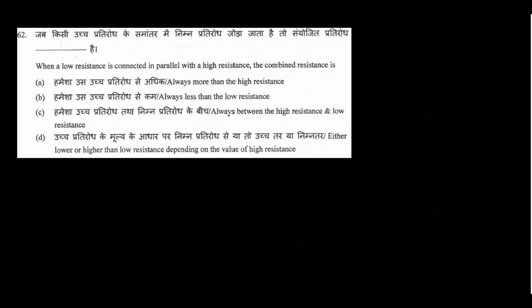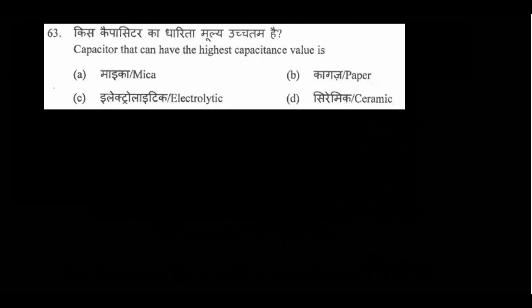Question 62: when a low resistance is connected in parallel with a high resistance, in the parallel combination the effective resistance will be lower than the lowest value resistance — always less than the low resistance. Question 63: the capacitor that can have the highest capacitance values is the electrolytic capacitor.